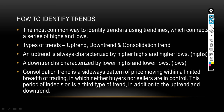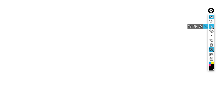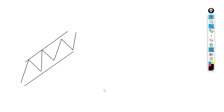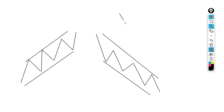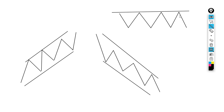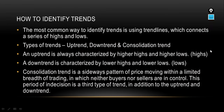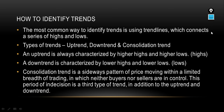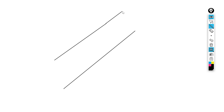I'm going to start by showing you what an uptrend looks like, then a downtrend, and lastly a consolidation trend. As we continue, I'll explain what the difference is between these three trends and what you need to look for in order to understand them. An uptrend is always characterized by higher highs and higher lows. When you want to understand an uptrend, you're going to focus on highs.